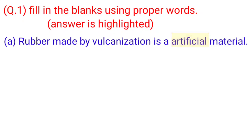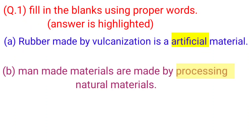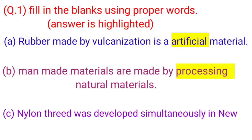Rubber made by vulcanization is an artificial material. B. Man-made materials are made by processing natural materials.